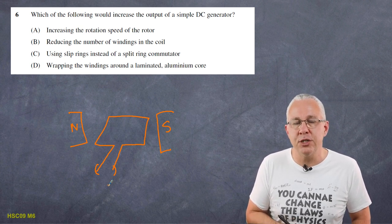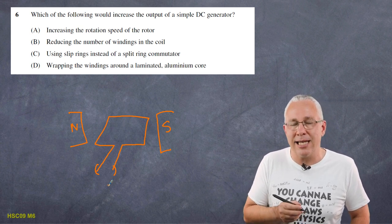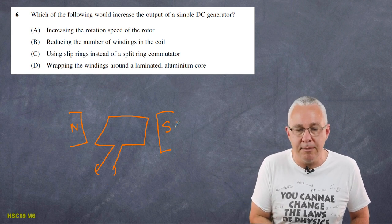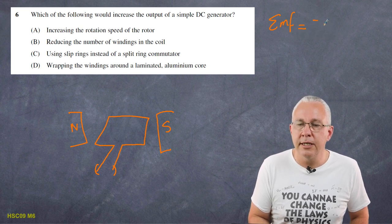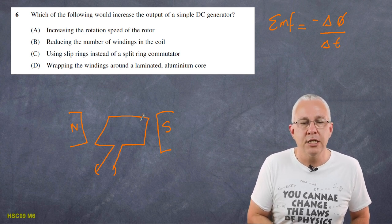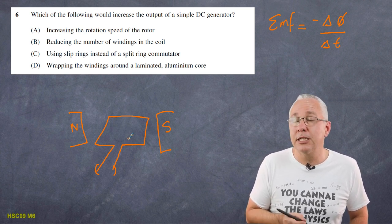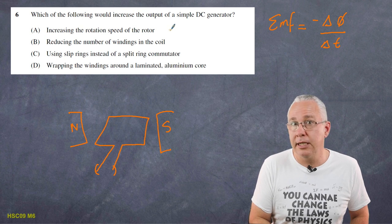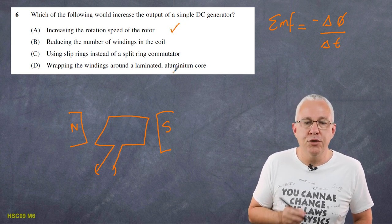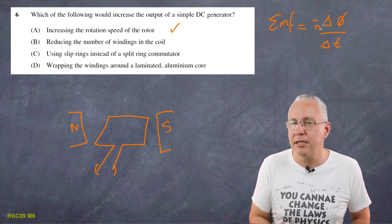Option A: increasing the rotation speed of the rotor. The point of DC generation is that we want a rate of change of flux. EMF is equal to negative delta phi over delta t — the rate of change of flux. If we increase the rotation of the rotor, the loop of wire will experience a greater rate of change of flux, so that would definitely increase the output. Option B: reducing the number of windings in the coil. Increasing the number of windings increases the EMF, so reducing them decreases it — incorrect.